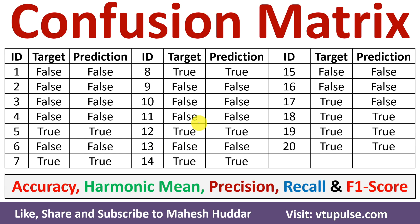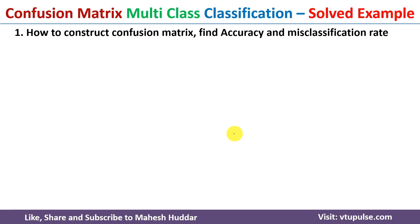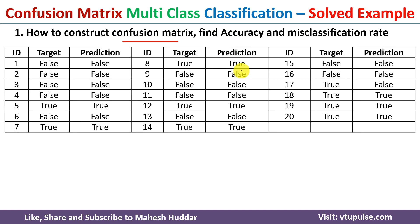Welcome back. In this video I will discuss, given the target class and the prediction, how to construct a confusion matrix and find different performance metrics like accuracy, harmonic mean, precision, recall, and F1 score. First we will try to understand how to construct the confusion matrix, and later we will try to calculate the different performance metrics. This is the data given to us — there are 20 examples, and for each example we have been given the target as well as the predicted class.